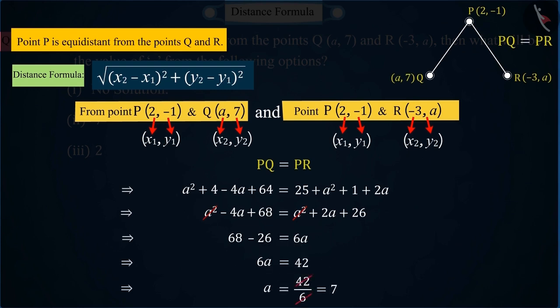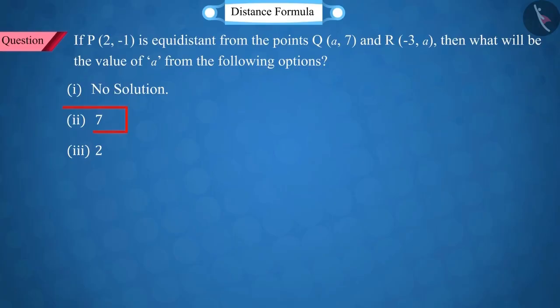We get a value of A is equal to 7, that is, option 2 is the correct answer.